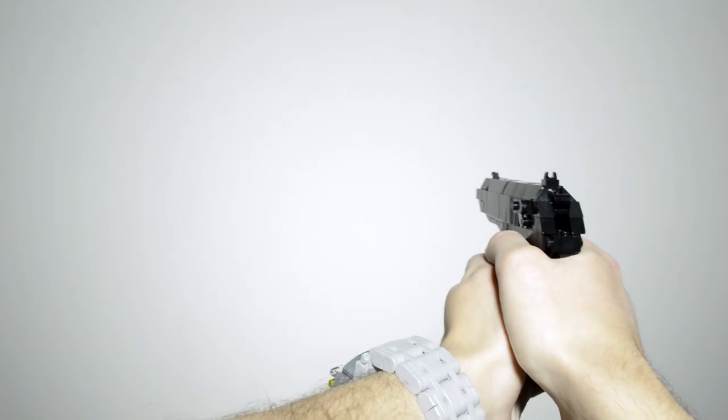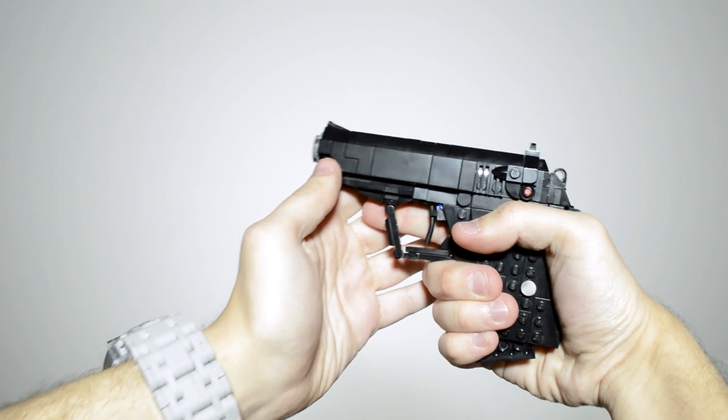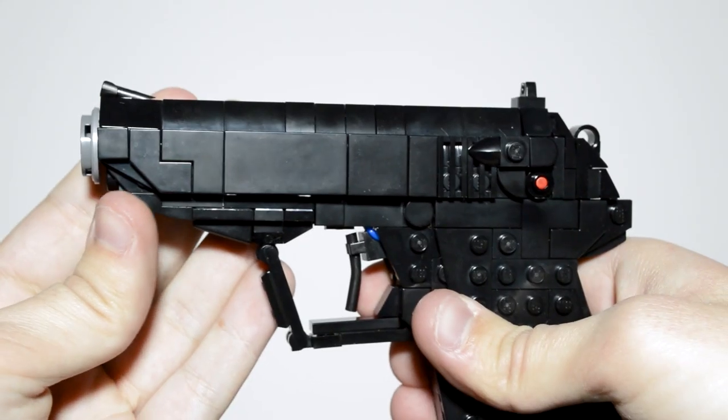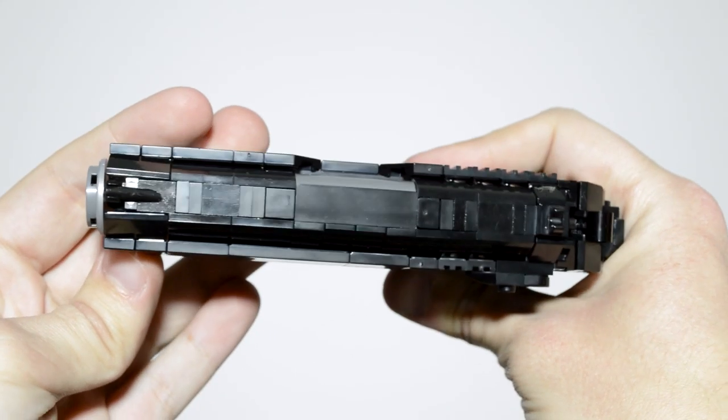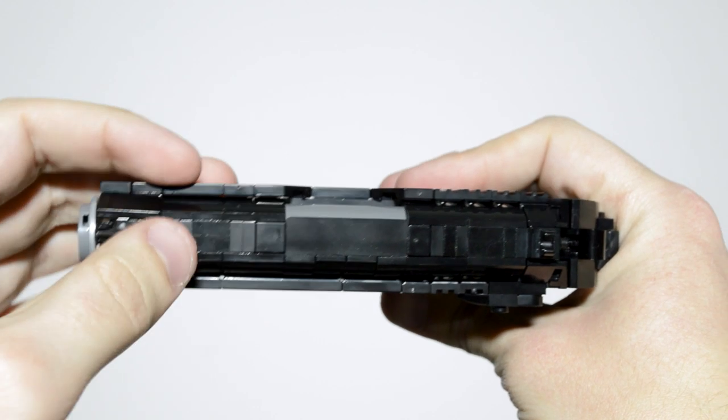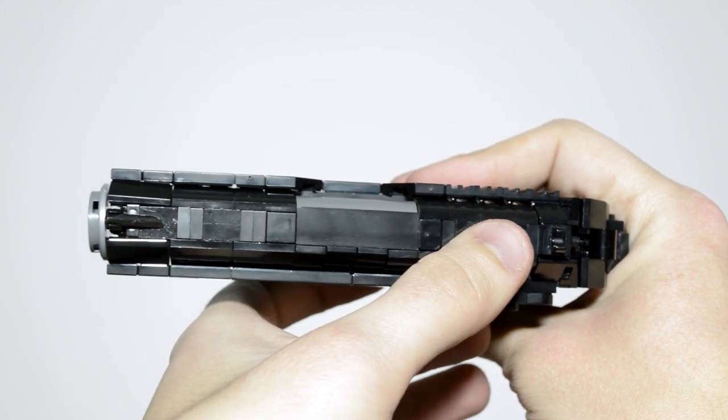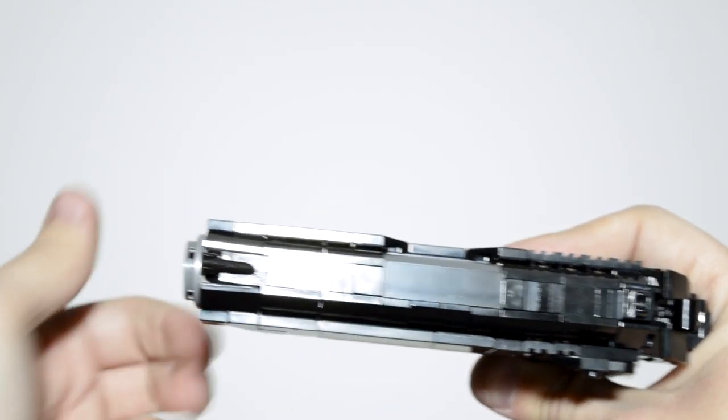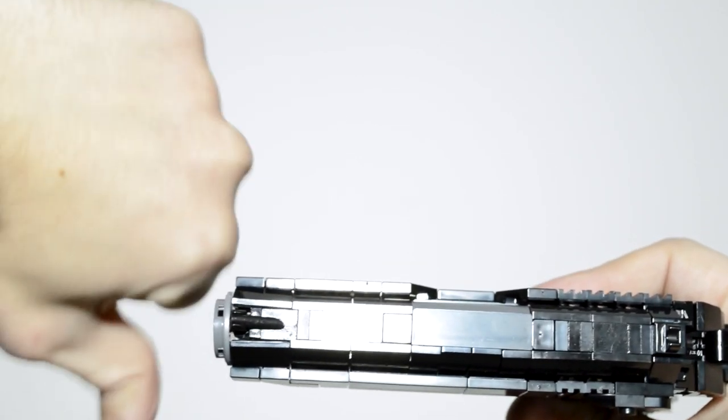Now let's show some of the details and techniques in both of these builds. The PPK was built around a frame that is primarily one stud wide. Looking from the top, you can see this. This one wide framework has studs facing either side to support the slide and grip details.